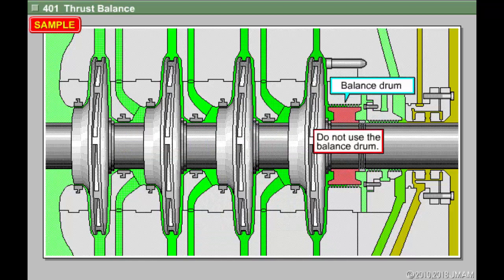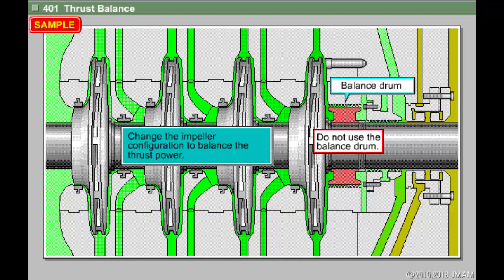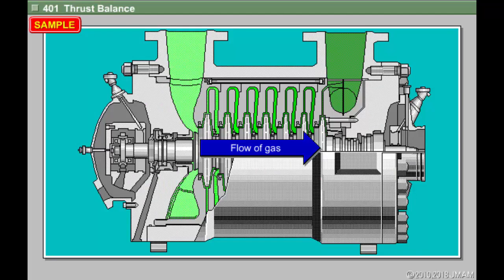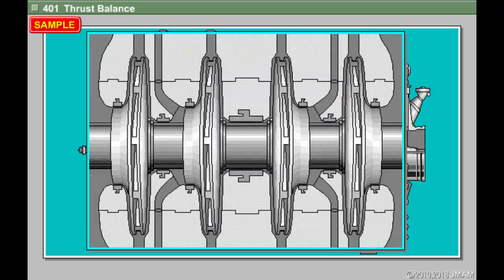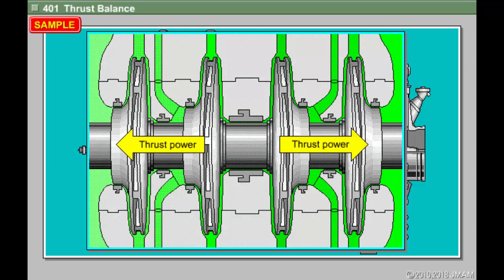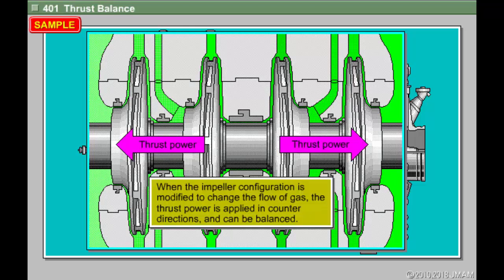The thrust power can also be balanced without using a balance drum by changing the impeller configuration. In the multi-stage compressors we have looked at so far, the gas flowed in only one direction. When the impeller configuration is modified to change the flow of gas, the thrust power is applied in counter-directions and can be balanced.